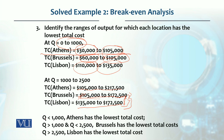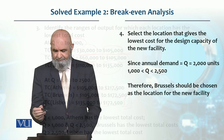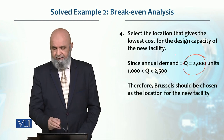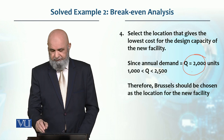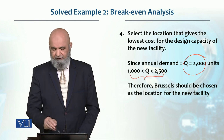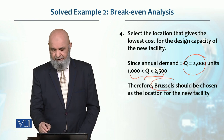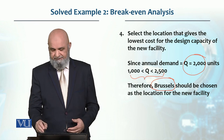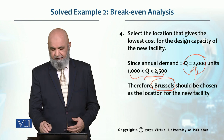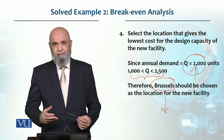So: if quantity is less than 1,000, select Athens; if between 1,000 and 2,500, select Brussels; if greater than 2,500, select Lisbon. Our required capacity and sales volume is 2,000 units, which falls within the 1,000 to 2,500 range — the lowest cost range for Brussels. Therefore, for 2,000 units, we select Brussels as the best location.